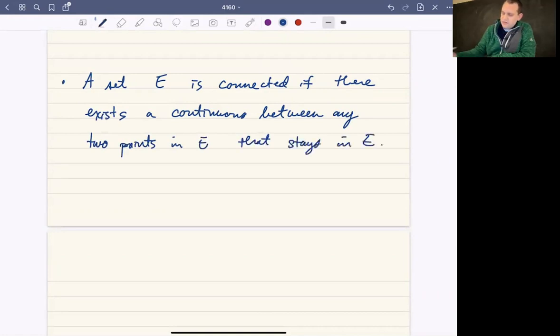This is just kind of an intuitive version. So for example, this set is connected because pick any two points, you can find a continuous path between the two points that stays inside that set.